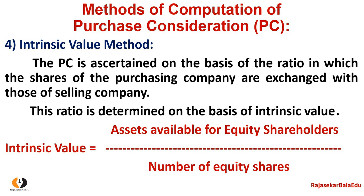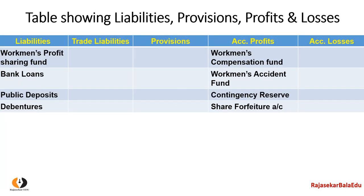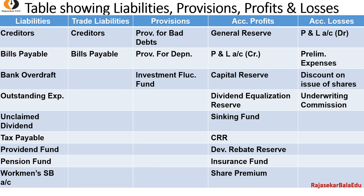These are the four important methods of purchase consideration. The key items include liabilities, provisions, and profit and loss. This is an important summary table. The net asset method and net payment method are essentially the same.